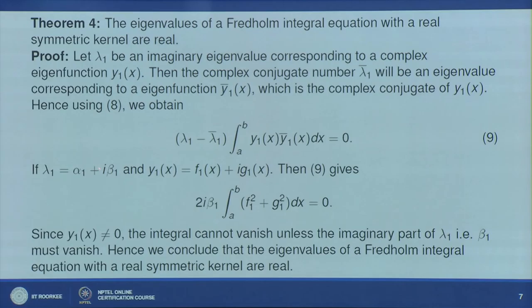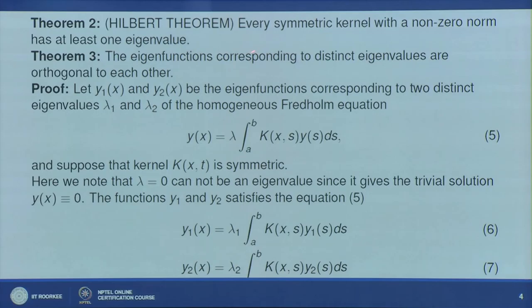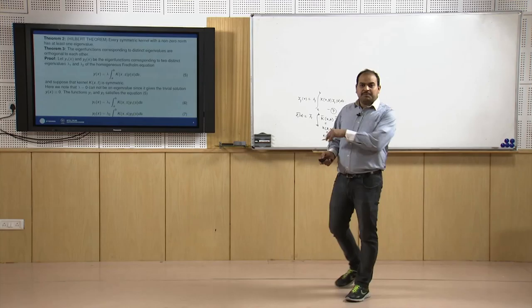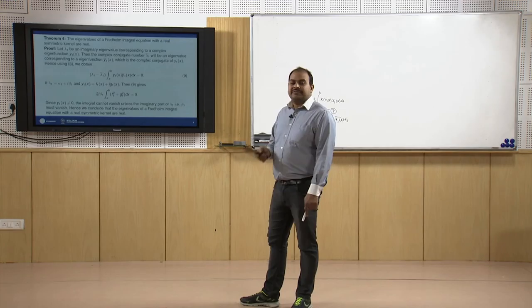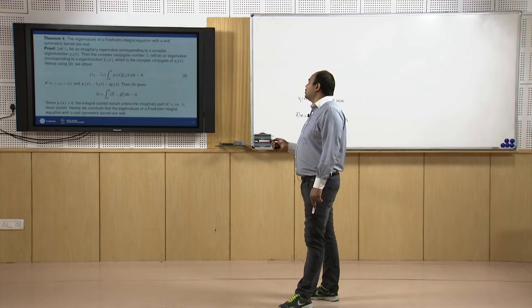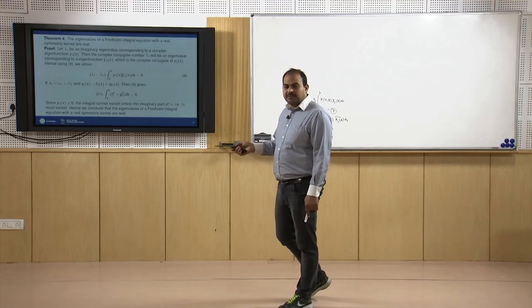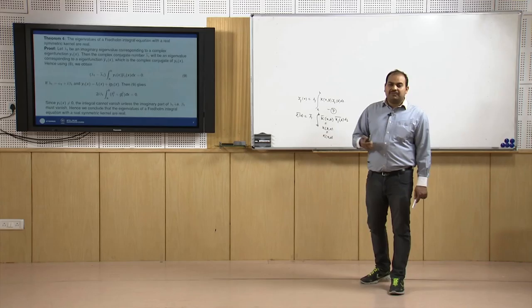This implies λ₁ is a real eigenvalue. So the eigenvalues of a Fredholm integral equation with a real symmetric kernel are all real. If we do not have a real symmetric kernel, we may have complex eigenvalues. All these results — orthogonality and reality of eigenvalues — hold only when we have a symmetric kernel.